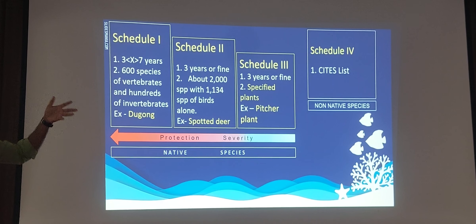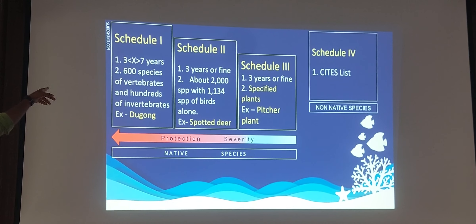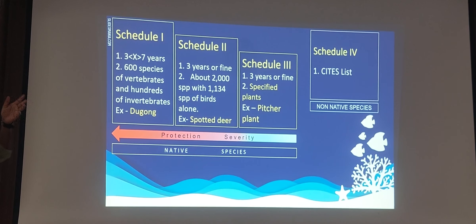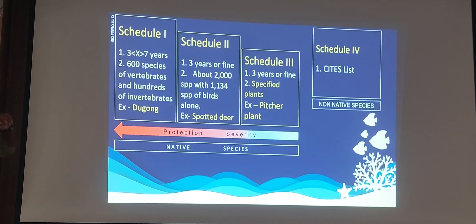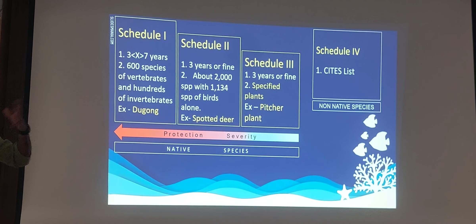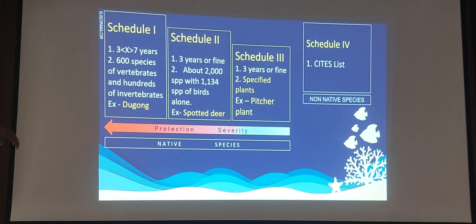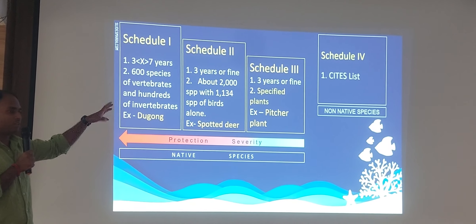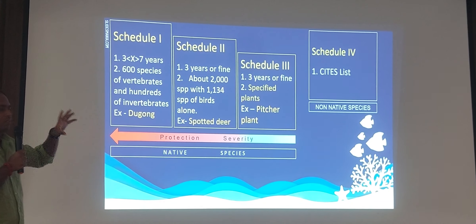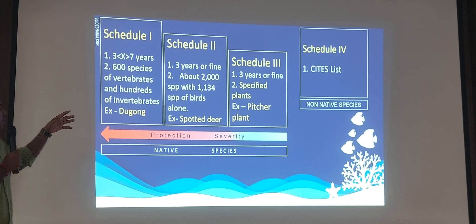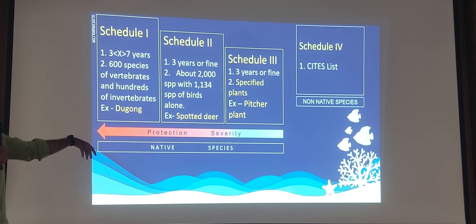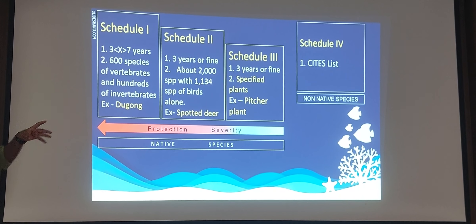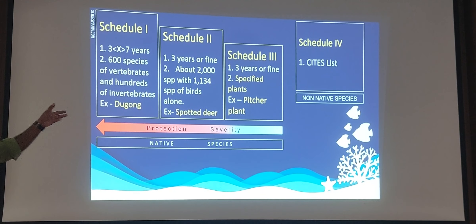The penalty for hunting any Schedule 1 species is not less than 3 years and not more than 7 years imprisonment. For example, tiger and elephant in India are Schedule 1 species. For Schedule 2 species — for example, water deer — the penalty is up to 3 years. Schedule 3 contains only plant species, around 20 of them; an example is the Nepenthes pitcher plant.